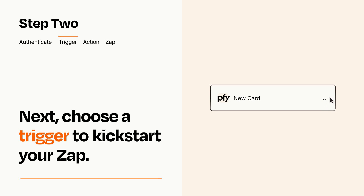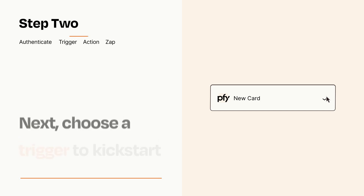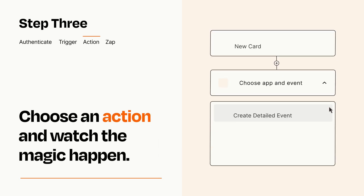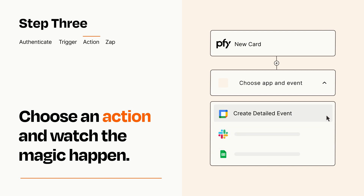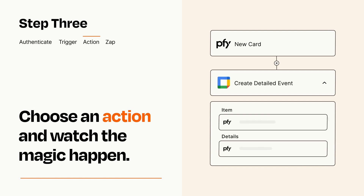This last part is where the magic happens. Choose the action you want to happen in your target app. You'll see a bunch of fields where you can specify the details of your Zap. You can type free form text or pull data in from your trigger step as needed.